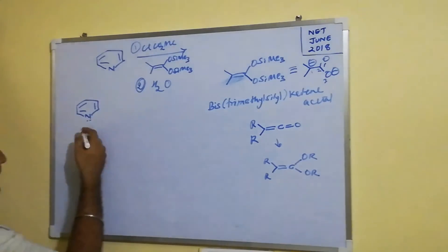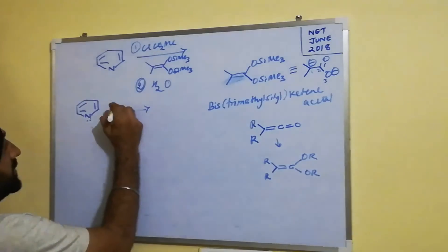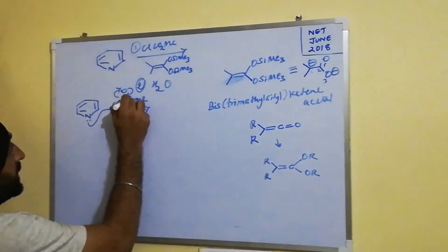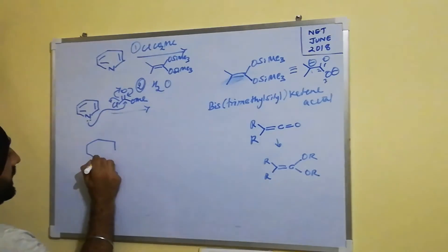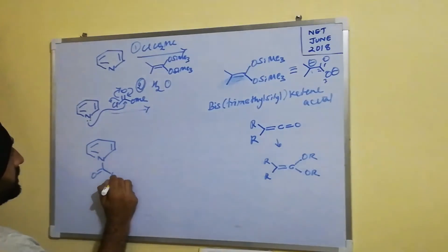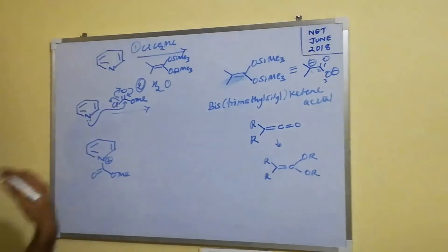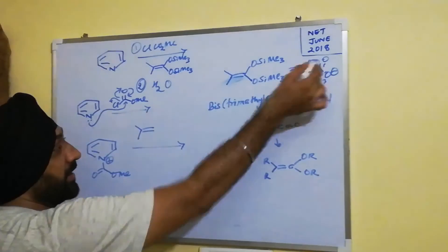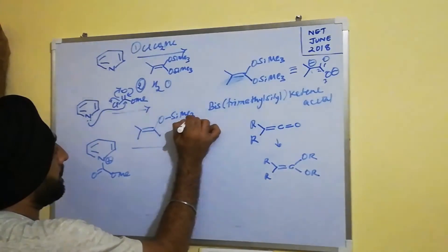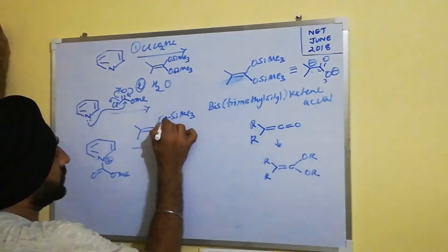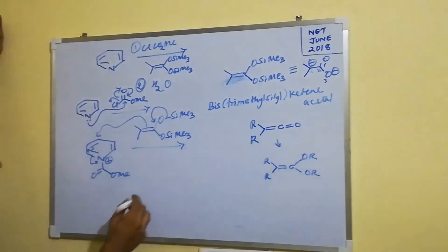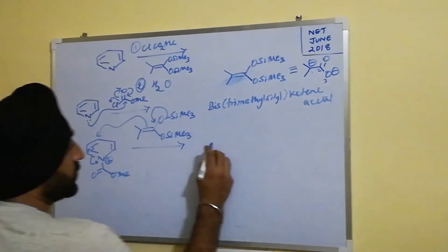Pyridine has a lone pair of electrons available to attack electrophilic species. It attacks methyl chloroformate — the bond forms and chloride leaves — giving a protonated nitrogen intermediate (an activated acylpyridinium species).